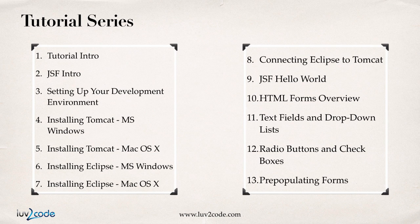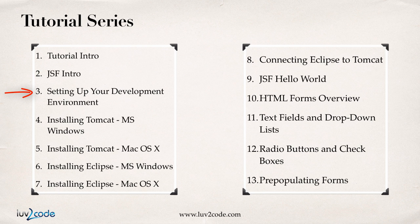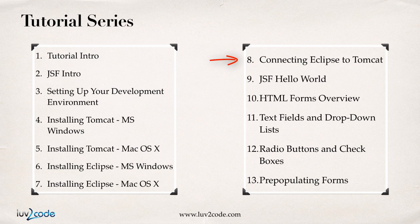Here's an outline of how this tutorial will work. First we have the tutorial intro, which is what I'm giving you now. Then we'll have a JSF intro, just a high-level intro of the JSF key concepts. Then I'll move forward and show you how to set up your development environment. This includes installing Tomcat — I'll show you how to install Tomcat for Microsoft Windows and Mac OSX. Then I'll show you how to install Eclipse for Windows and OSX again. Then I'll move forward and show you how to connect Eclipse to Tomcat. At this point, we'll have our development environment set up.